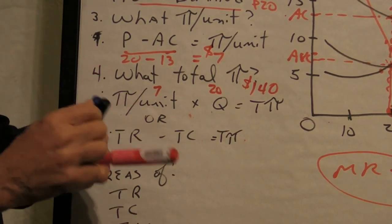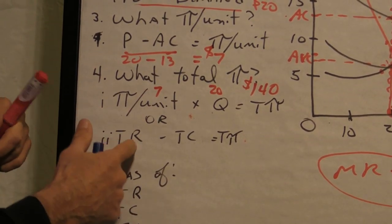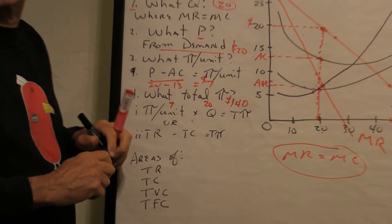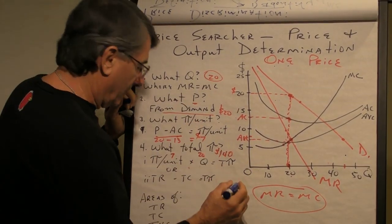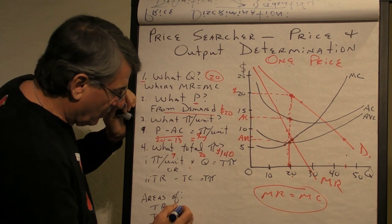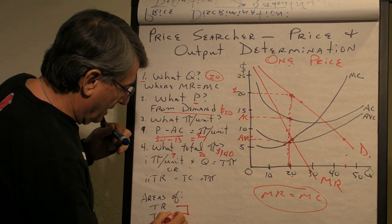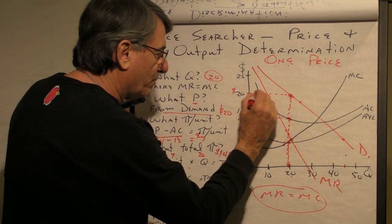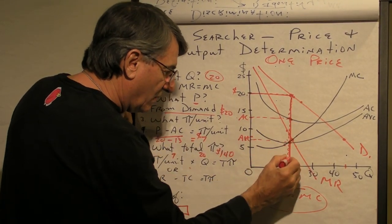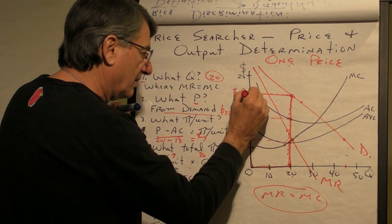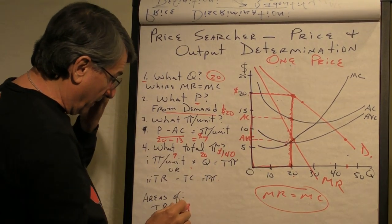Now, the other way to look at it, of course, is to use total revenue, subtract total cost, and what's left over is total profit. You can see these areas here. The area of total revenue is equal to—we'll make red total revenue here. The area of total revenue is price, $20, times quantity, so this red rectangle here represents total revenue.